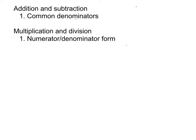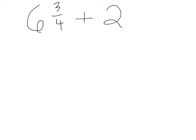Just as a simple reminder, we need to make sure we have common denominators first. Let's look at a problem starting with mixed numbers. Let's say we have 6 and 3 fourths plus 2 and 1 eighth. Remember with addition and subtraction, as far as mixed numbers go, we can isolate our fractions first — meaning we'll come back and get the 6 and the 2 later.